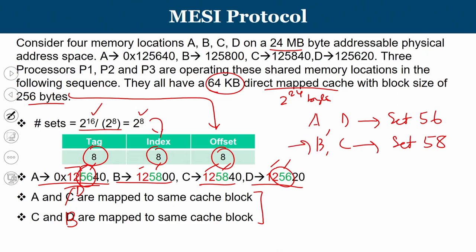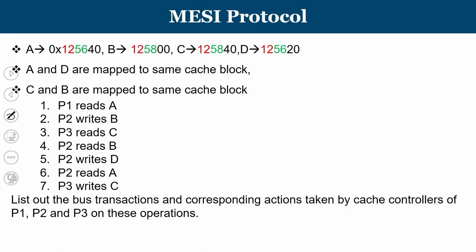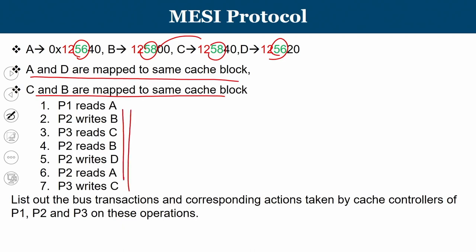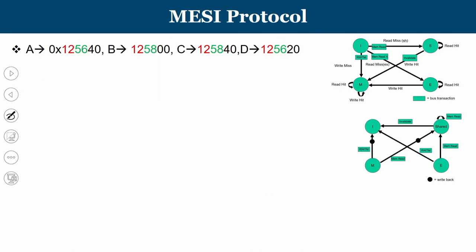With A and D in the same block, and B and C in the same block, we trace the operations. P1 reads A: since everything is initially empty (cache miss), P1 sends a read request and P1's copy moves to the Shared state. P2 writes B: this is a write miss, so B is placed in the Modified state in P2's cache.